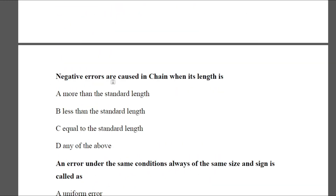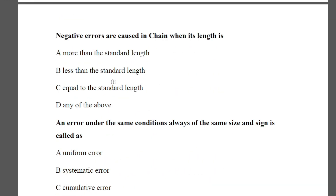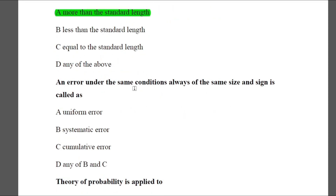Question 17: Negative errors are caused in a chain when its length is — Option A: more than the standard length, Option B: less than the standard length, Option C: equal to the standard length, Option D: any of the above. The answer is A — more than the standard length.